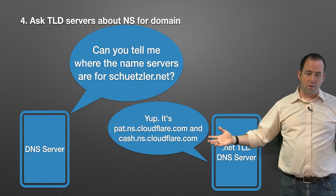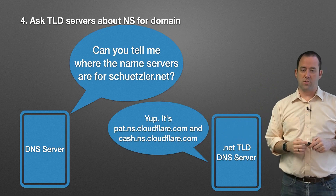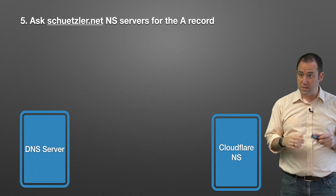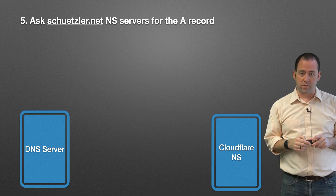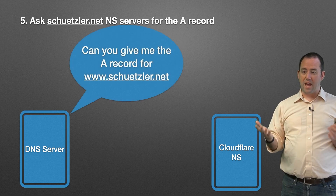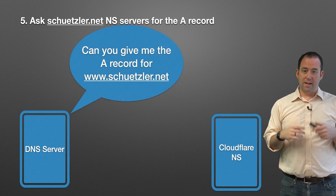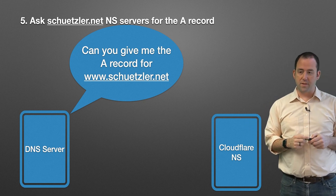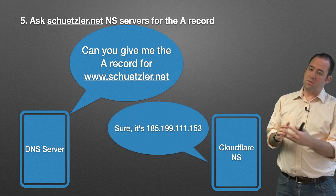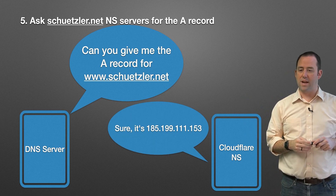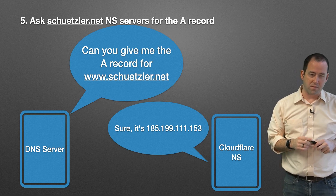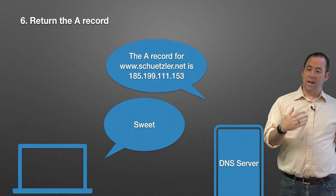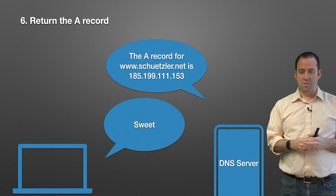We know where those are, so let's go ask them now. We know the name servers for schetzler.net, but we still need to resolve www. So we ask the schetzler.net name servers for the A record for www.schetzler.net. The A record for www.schetzler.net is listed on the Cloudflare name servers, and the Cloudflare name server says it's 185.199.111.153. There's your IP address. Now our DNS server knows the IP address and passes that back to us.